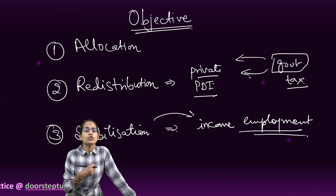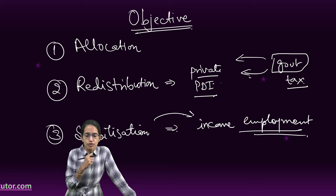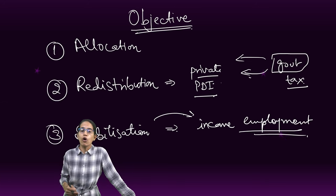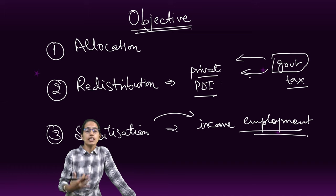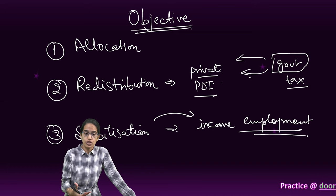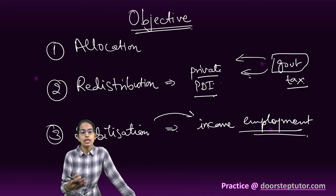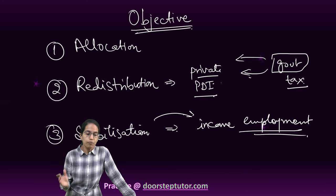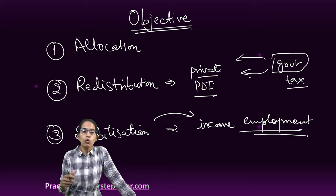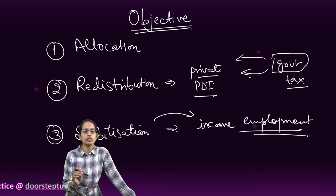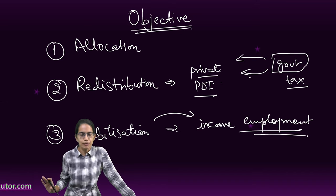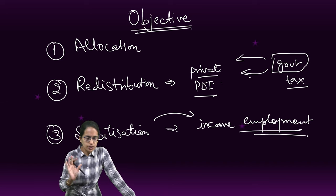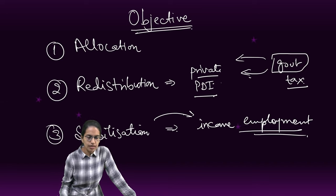The next purpose is stabilization. If there are fluctuations in income or unemployment, those would be addressed through stabilization. In times where the economy is performing weakly with higher unemployment, the government would offer employment opportunities. If there is oversaturation, more avenues would be opened. Underemployment, overemployment, and income generation all have to be stabilized so the economy keeps running smoothly.